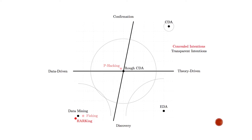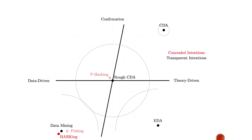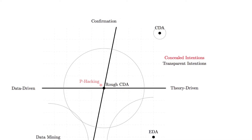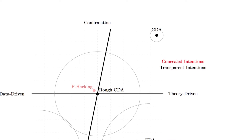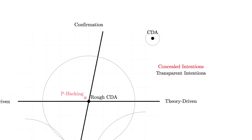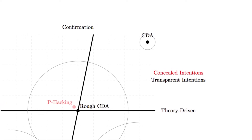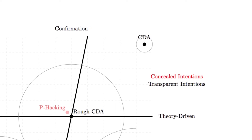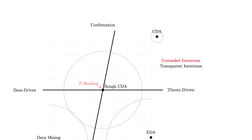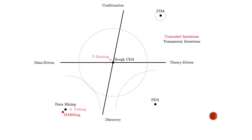In the top right of the graphic we have CDA — Confirmatory Data Analysis. Here you are high in confirmation, meaning you already have a hypothesis you're testing, and that hypothesis is driven by theory. The rules are that you must pre-register and follow your data analysis plan exactly. Otherwise, any probabilities you compute are meaningless.